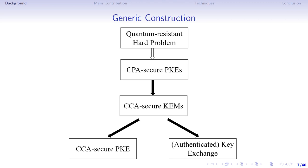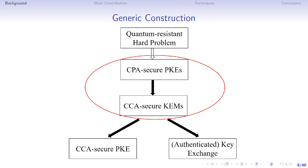To construct a CCA-KEM, we usually first build a CPA-secure PKE from a post-quantum hard problem, and then by a generic transform we can obtain a CCA-secure KEM. As a fundamental primitive, a CCA-KEM can also be used to construct a CCA-secure PKE and a key exchange. Here we mainly focus on the generic construction of a CCA-KEM from a CPA-secure PKE.